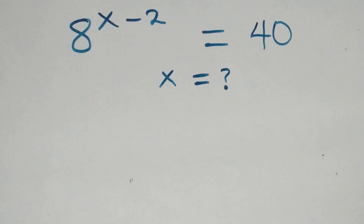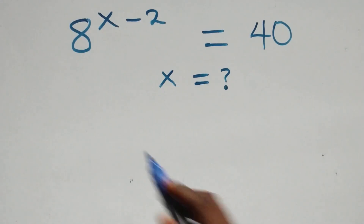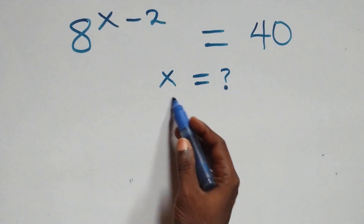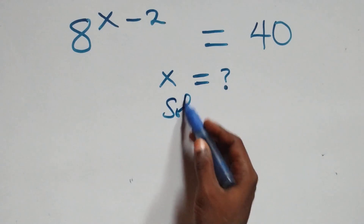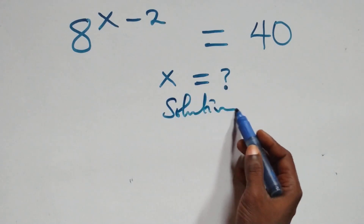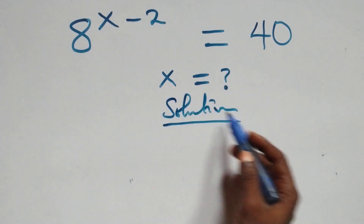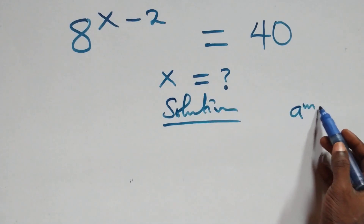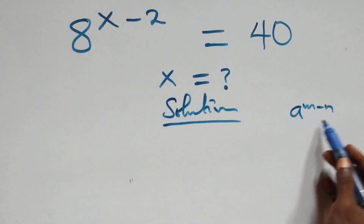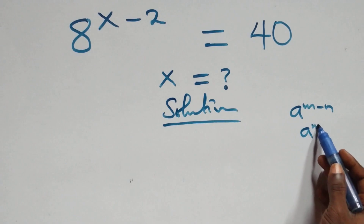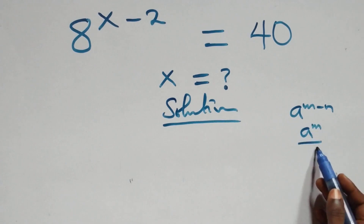Hello and welcome. How to solve this nice exponential equation. What we have here is: when we have a raised to power n minus n, it is the same thing as a raised to power n over a raised to power n.